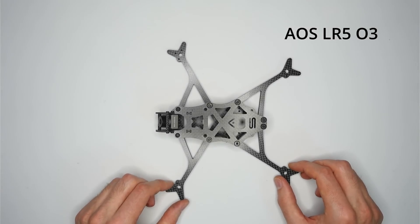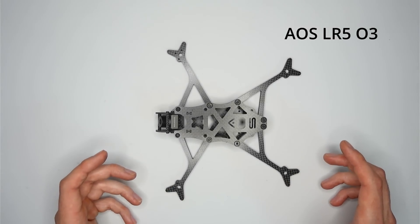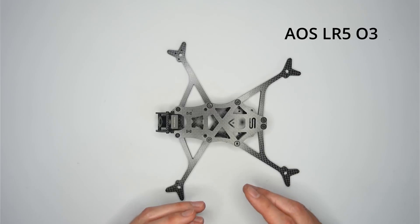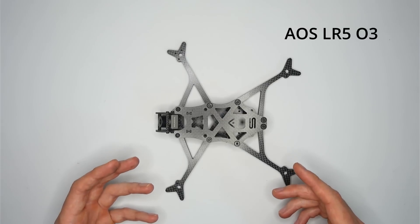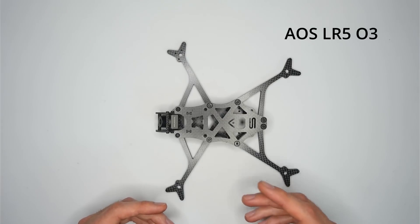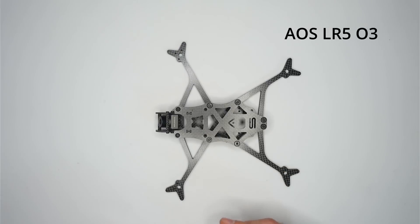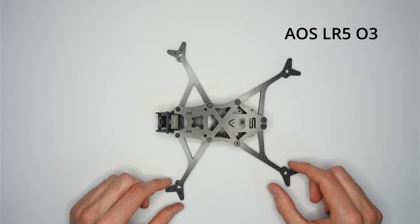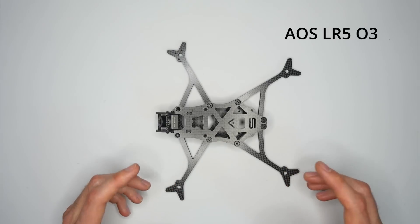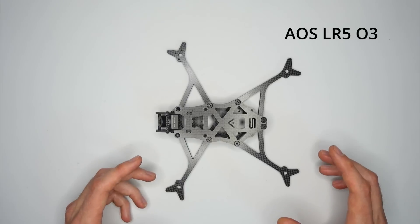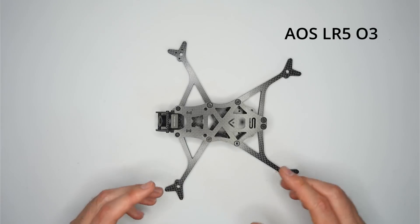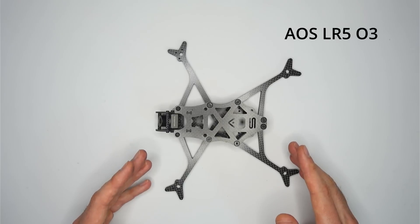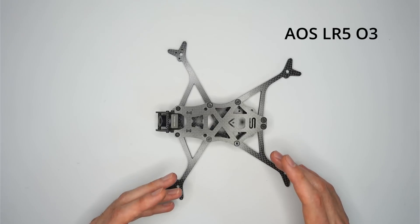The next frame I want to show you is the AOS LR5 O3, and this is a long-range 5-inch frame. So it's designed for 5-inch bi-blade props, 2004 or 2104 size motors, and it's designed to cruise for long periods of time very efficiently. So it's a lightweight frame, it's designed to carry something like a lithium-ion pack, or a large lipo to give you that flight time.